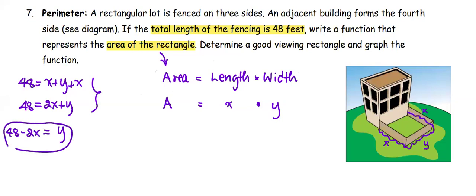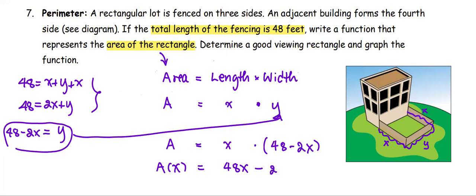After we get y in form of x, we're going to substitute the y term in the area function. Therefore, the area is x multiplied by the quantity 48 minus 2x. Simplified to be A as the function of x equals x times 48 or 48x minus x times 2x or 2x squared. Now we get the area of the rectangle as the function A(x) equals 48x minus 2x squared.